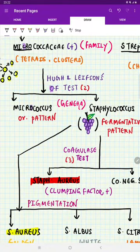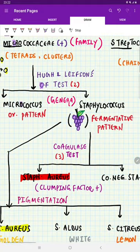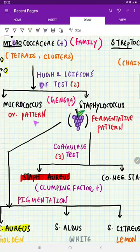The moment we are remembering staphylococcus, which fruit is coming? Grapes, right. We know grapes are fermented. So remember that way also. Staphylococcus shows fermentative pattern, whereas micrococcus shows oxidative pattern.